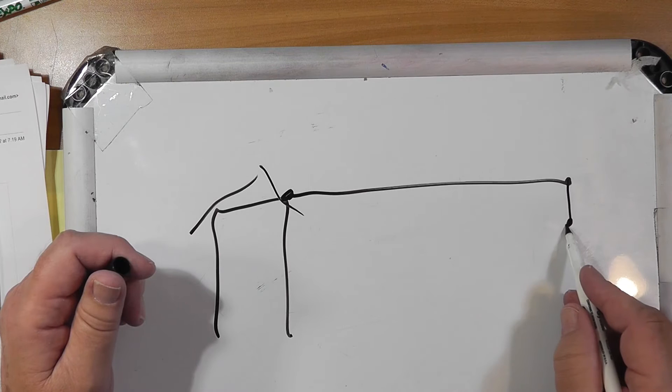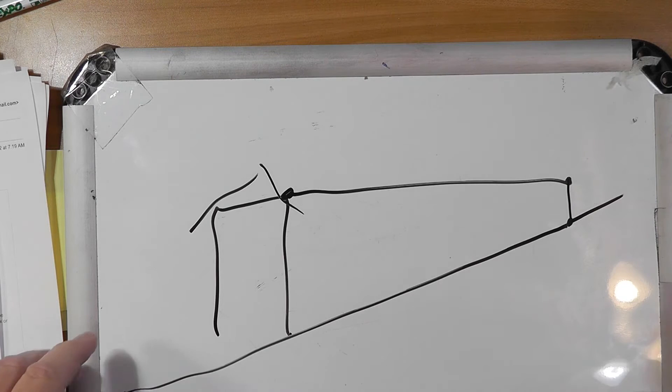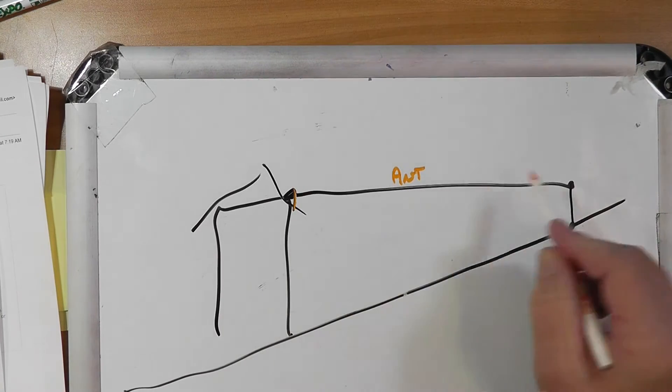And the land slopes. So here's his antenna, right here, from here to here.